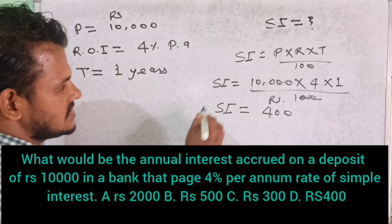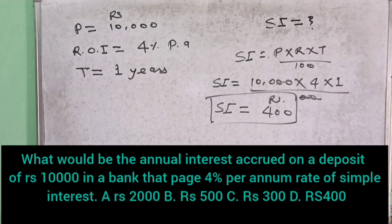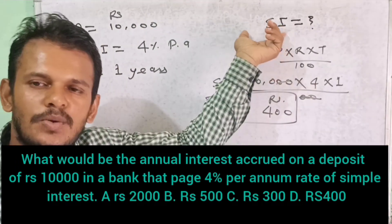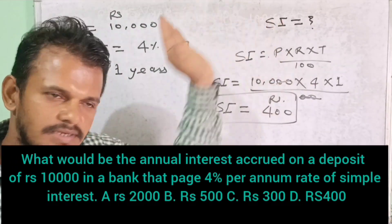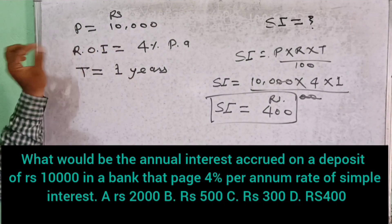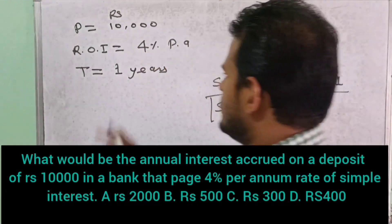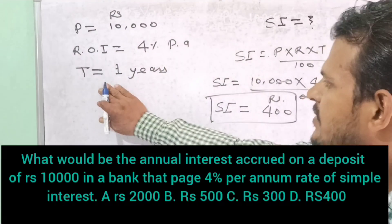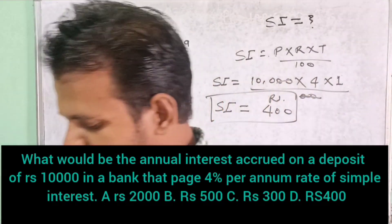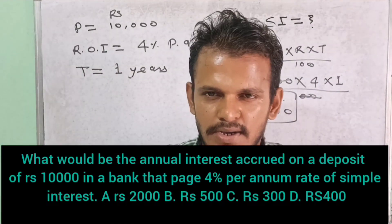We need to know what is the simple interest. Simple interest is not mentioned in the question — we need to calculate it. Principal is Rs. 10,000, rate of interest is 4% per annum, and the time is one year. We need to find what is the simple interest. The simple interest formula is PRT by 100.